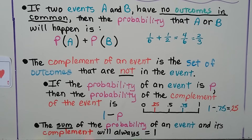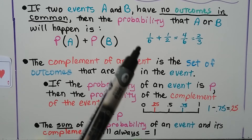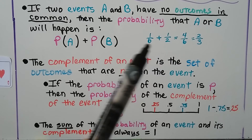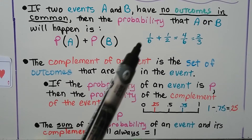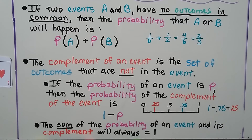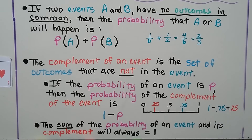If two events A and B have no outcomes in common, then the probability that A or B will happen is the probability of A plus the probability of B. So if we had a 1/6 chance of rolling a 4 and a 1/2 chance of rolling an odd number, they don't have anything in common. We can add 1/6 plus 1/2 — that's 1/6 plus 3/6 — we'd have 4/6, which simplifies to 2/3.